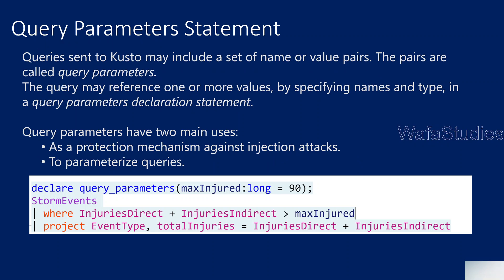Let's understand what are query parameter statements in Kusto. Queries that we send to Kusto may include inside them name and value pairs. That means if you write any query in Kusto which will be sent to ADX or a runtime engine, in that query we can include name-value pairs, and those name-value pairs we can call query parameters.